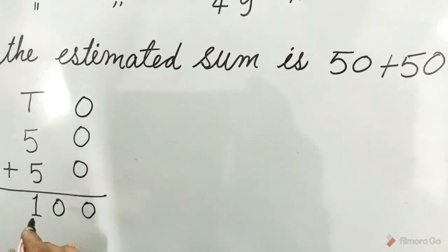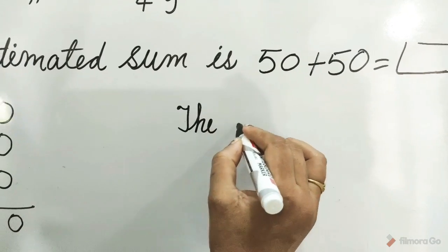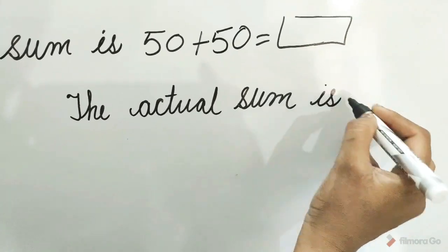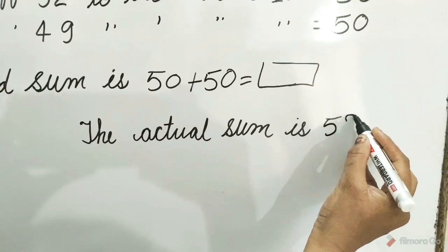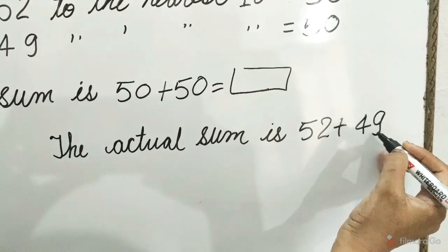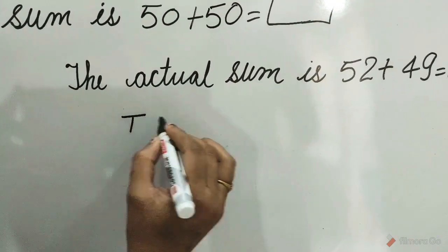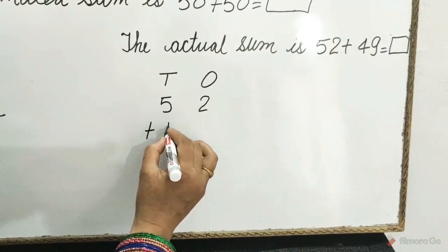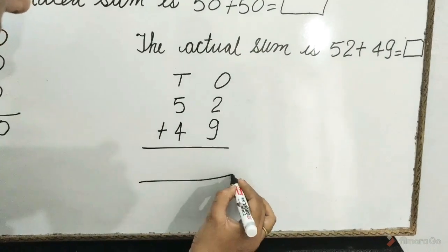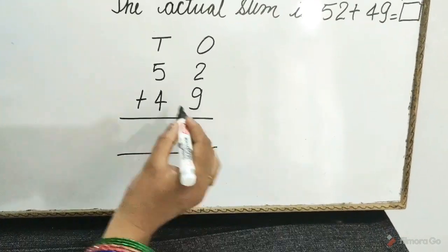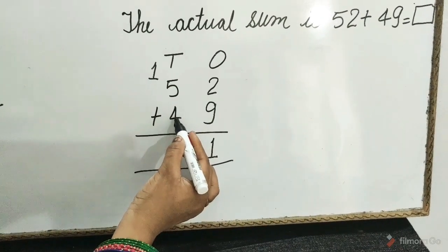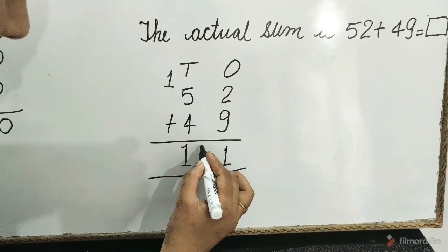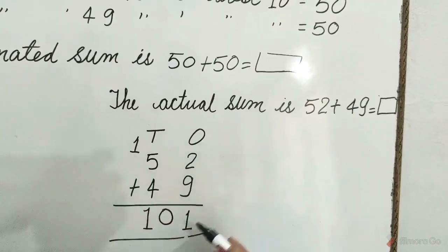Now the actual sum is 52 plus 49 is equal to what? Write T for tens and O for ones: 5 tens 2 ones plus 4 tens 9 ones. Children, 9 plus 2 is equal to 11, carry 1 to the tens place. 4 plus 5 is equal to 9, and plus 1 carry over is equal to 10. And the actual sum is 101.